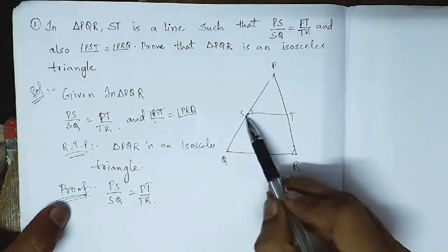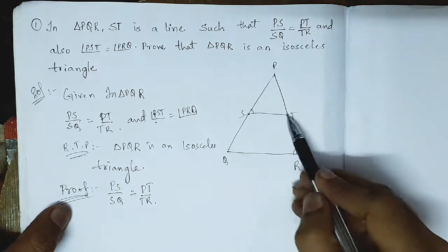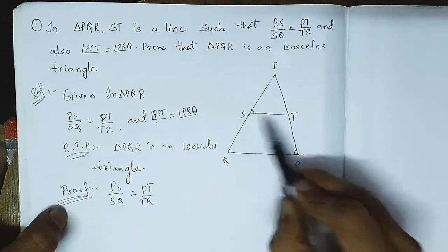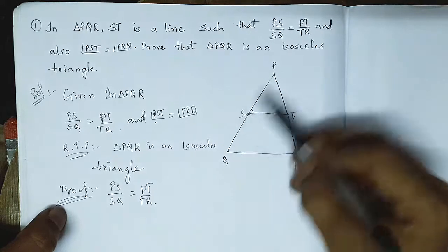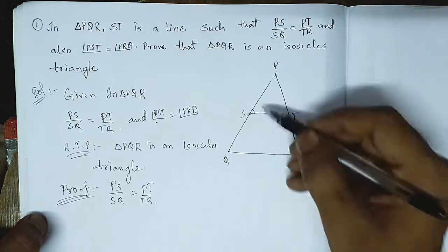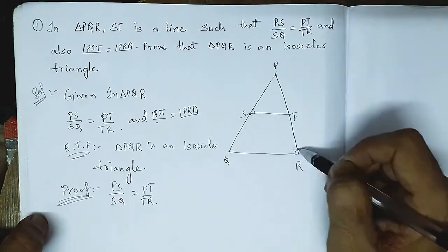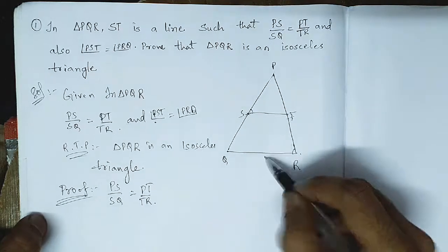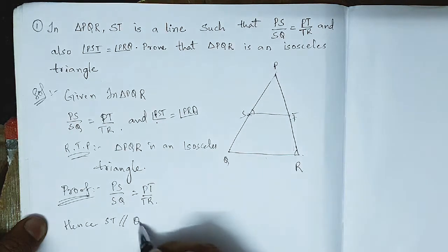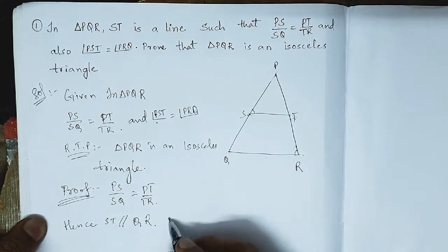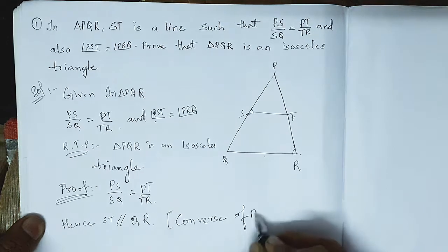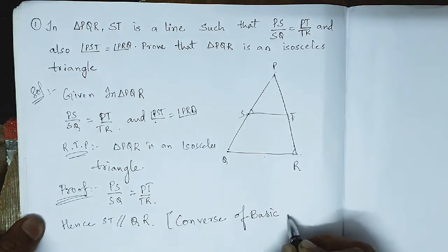With this we can know that S is a point such that PS by SQ, and T is another point such that PT by TR. These two points join to form a line ST, which is dividing the other two sides in the same ratio — PS by SQ equals PT by TR. When a line divides two sides in the same ratio, it is parallel to the third side. Hence, ST is parallel to QR, by the Converse of the Basic Proportionality Theorem.